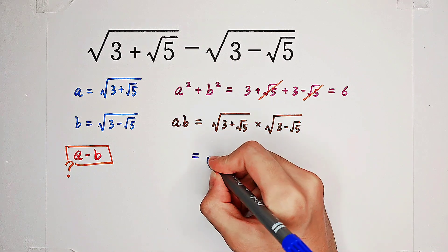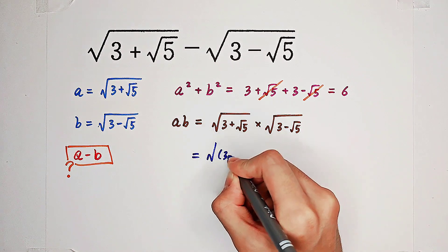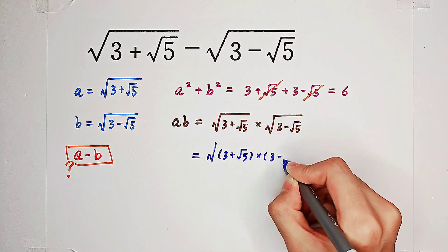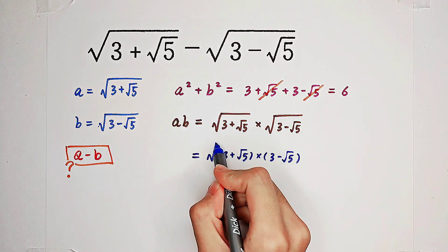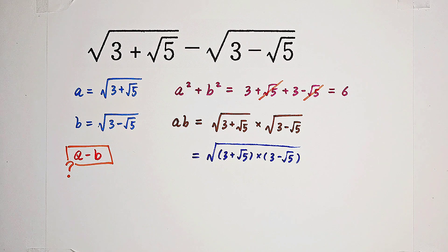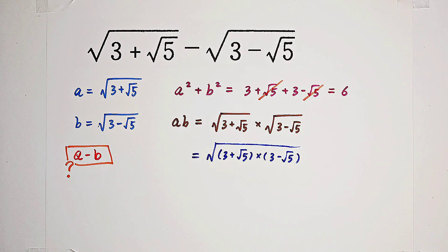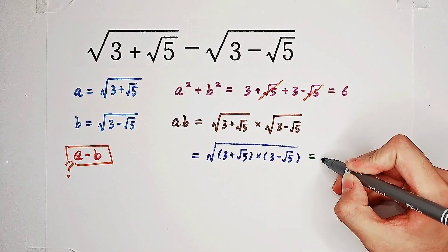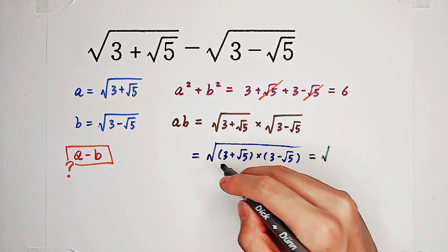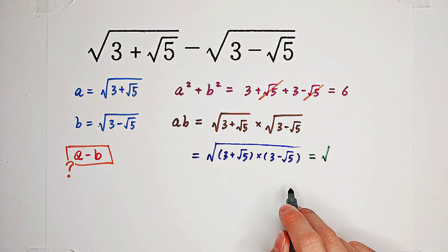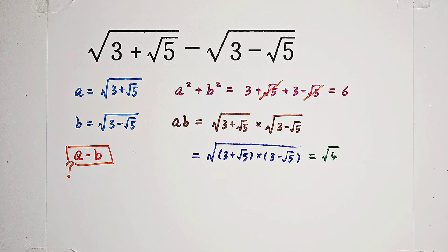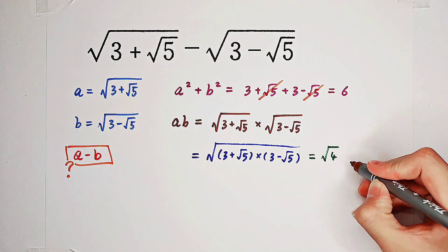Now, this one is just square root of 3 plus square root of 5 times 3 minus square root of 5. Oh, you can see, x plus y times x minus y, which is x squared minus y squared. That means it is square root of 3 squared minus 5, which is 4. And square root of 4 is 2.